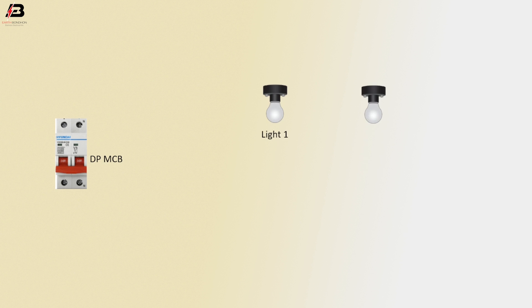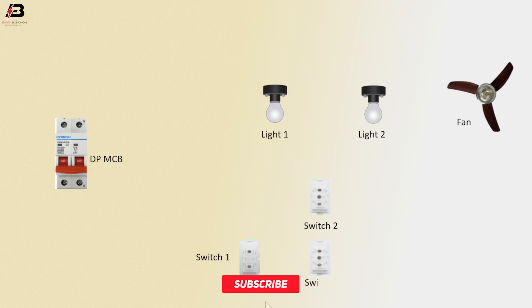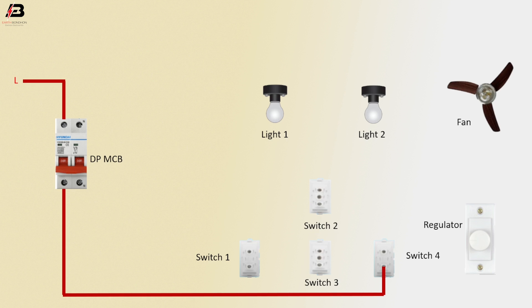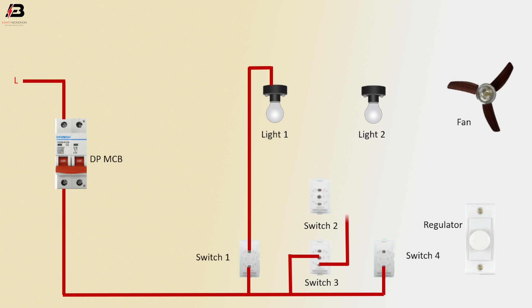Let's start. Double pole MCB, Light 1, Light 2, Switch 1, Switch 2, Switch 3, Switch 4, and Regulator. Phase connection to DP MCB. Phase connection outgoing from DP MCB to Switch 4, Switch 3, and Switch 1 terminal. Phase connection outgoing from Switch 1 to Light 1. Phase connection outgoing from Switch 3 to Switch 2. Phase connection outgoing from Switch 3 L1 to Switch 2 L1. Phase connection outgoing from Switch 2 common to Light 2.